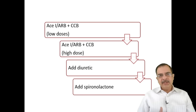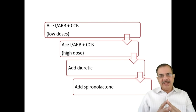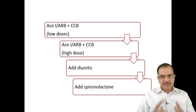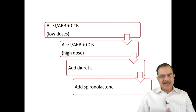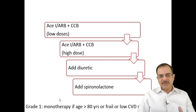Target blood pressure: in patients with comorbid conditions such as diabetes, CAD, or CKD, the target is below 130/80. In young patients with no comorbidities and no hypertension-mediated organ damage, maintaining BP at or below 140/90 is acceptable. Most guidelines recommend keeping BP at 130/80 or less in high-risk patients or those with hypertension-mediated organ damage. In elderly, frail patients or those with low CVD risk and Grade 1 hypertension, monotherapy may be used as well.